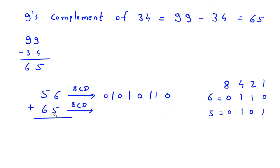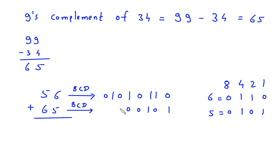Now for 65: 5 in BCD is written as 1010, and 6 is written as 0110. So 65 in BCD is 0110 1010.